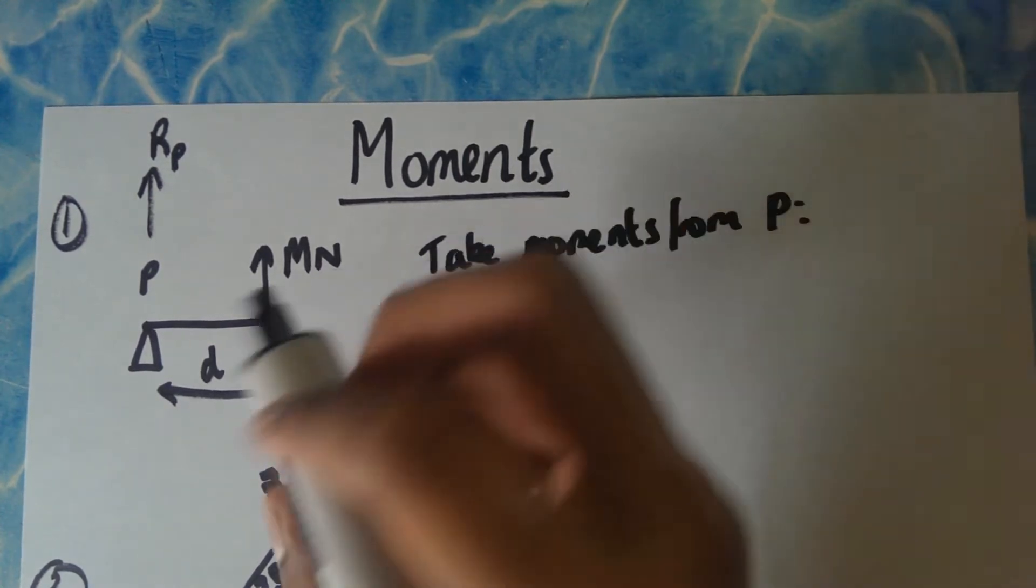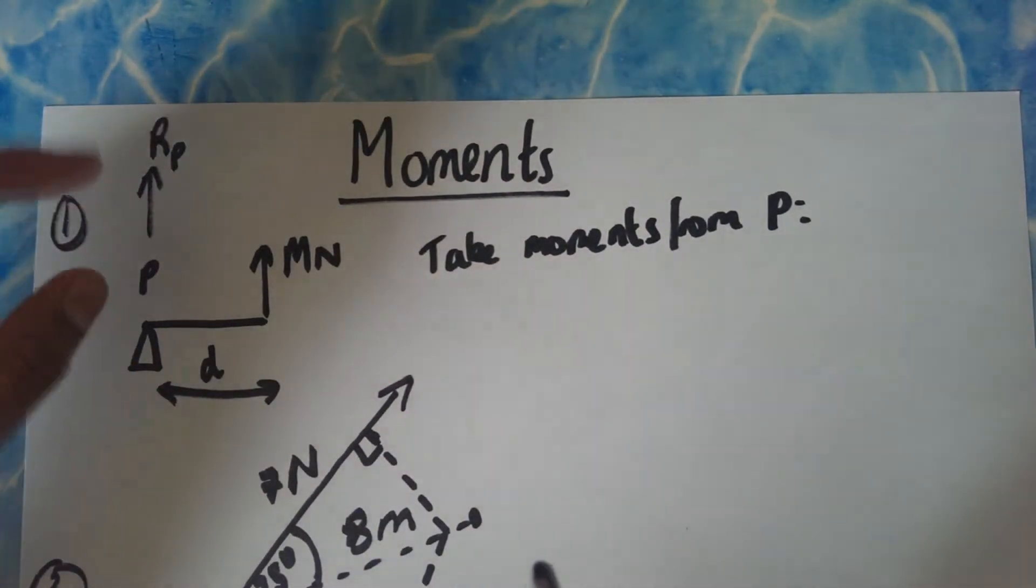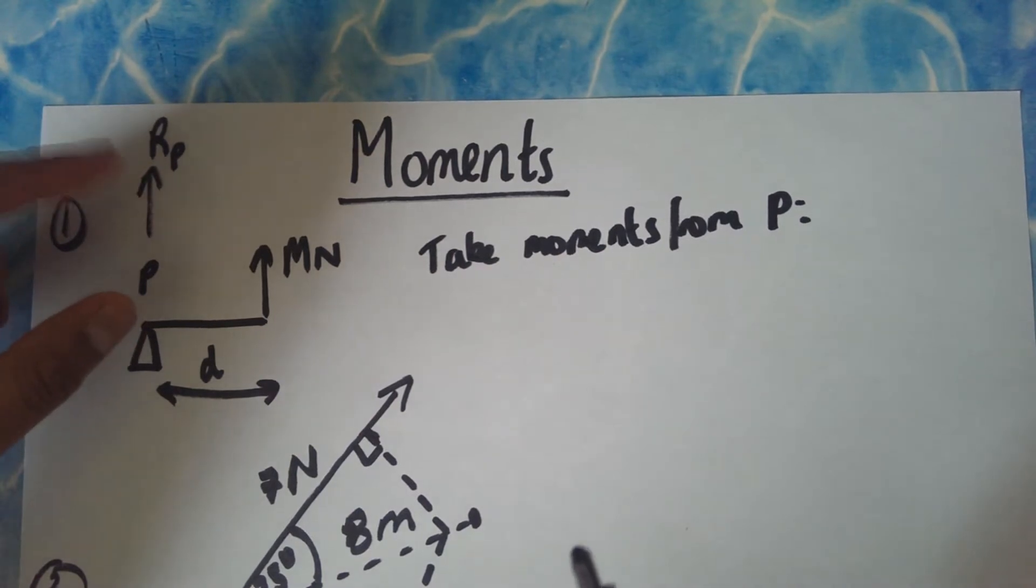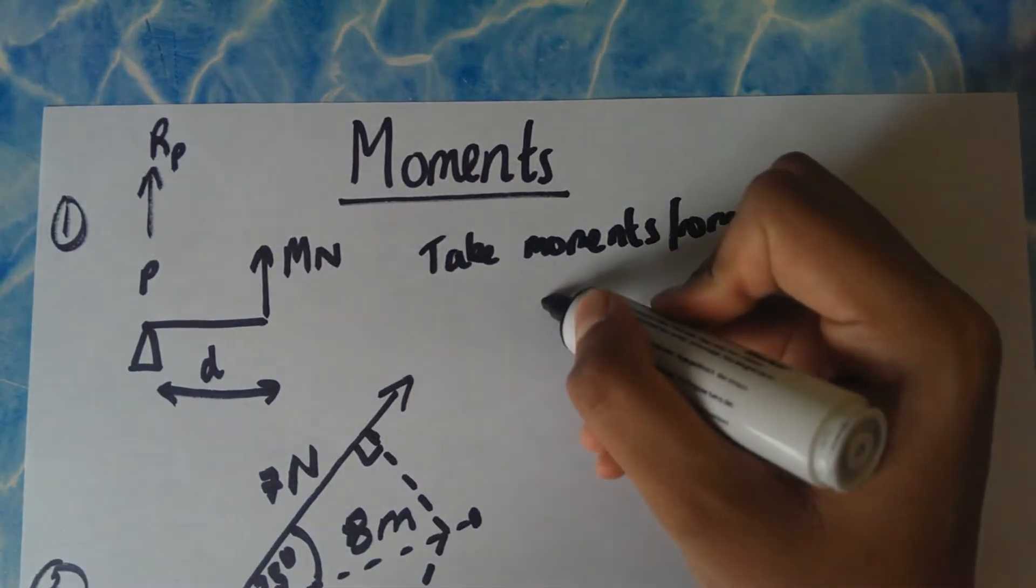If you start with the clockwise moments, which is everything this way around, there isn't one because obviously this is not acting clockwise or counterclockwise because it's at the pivot. So basically there's no clockwise, it's zero.